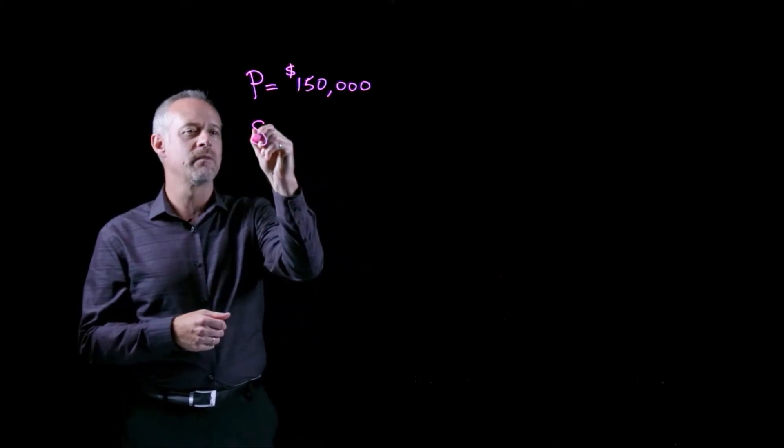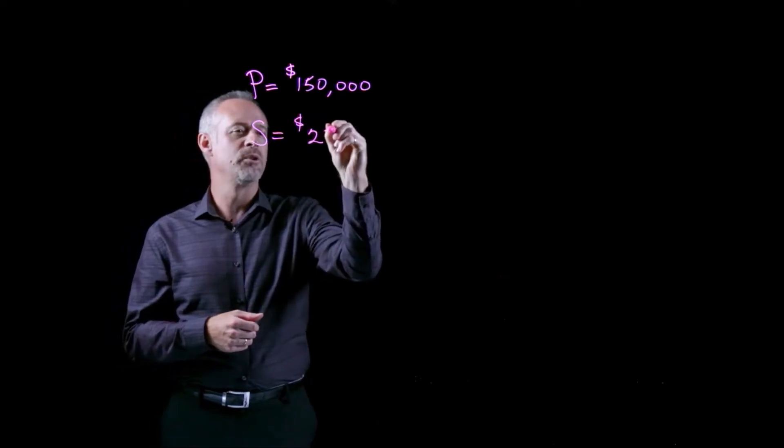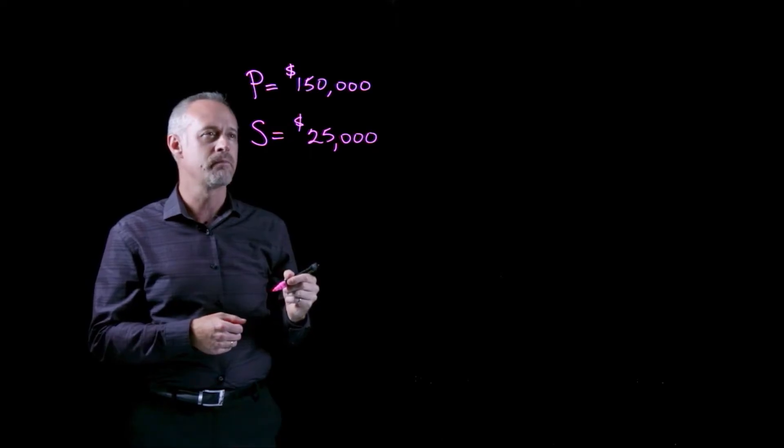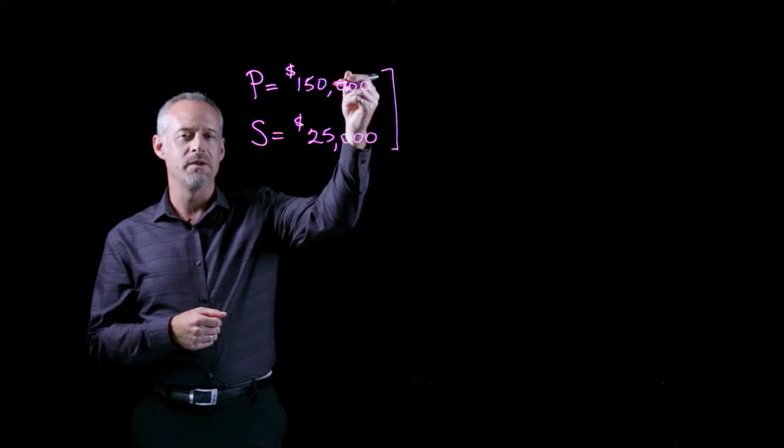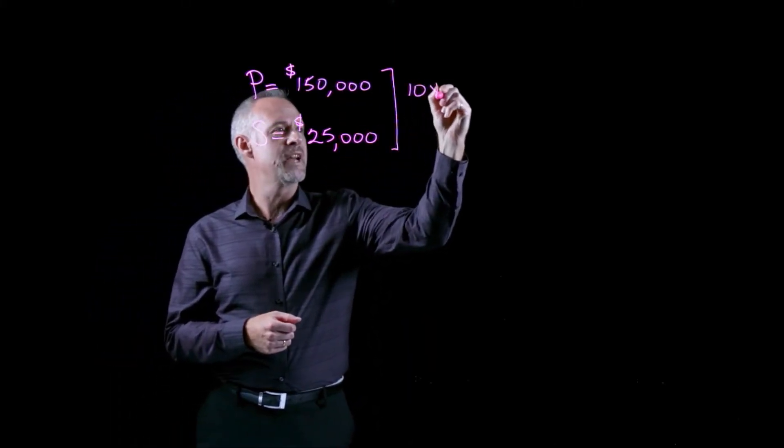And we're going to give that S as the variable, and we're told in the problem the salvage value of this asset is twenty-five thousand dollars. And the time over which the purchase price reduces to the salvage value is ten years.